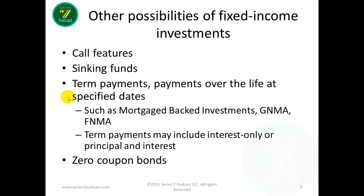The last feature to cover is zero coupon bonds. They are simply bonds that don't have a fixed interest rate and don't have interest payment dates, but mature at par at a specific date. You derive the interest rate based on what you pay for the bond and the time to maturity.